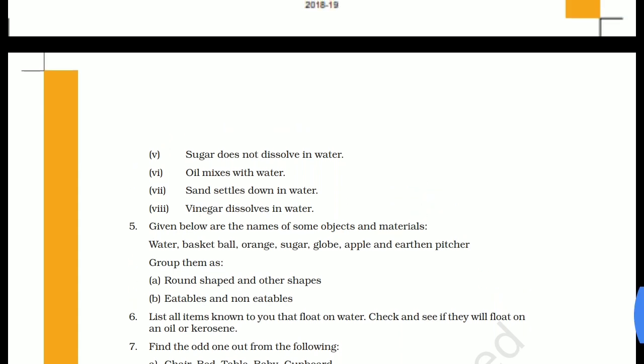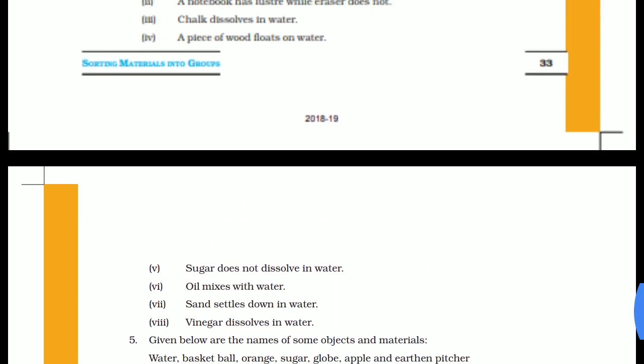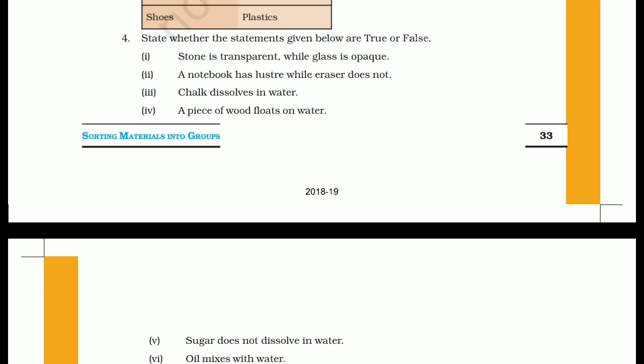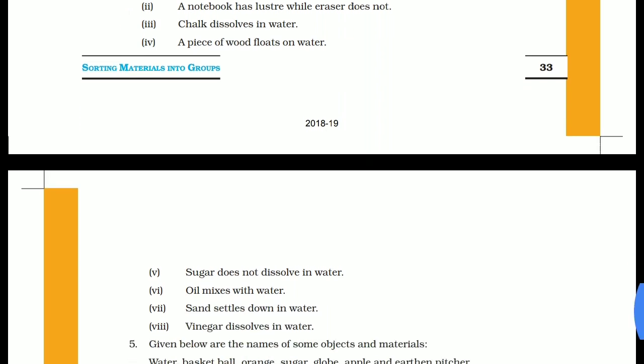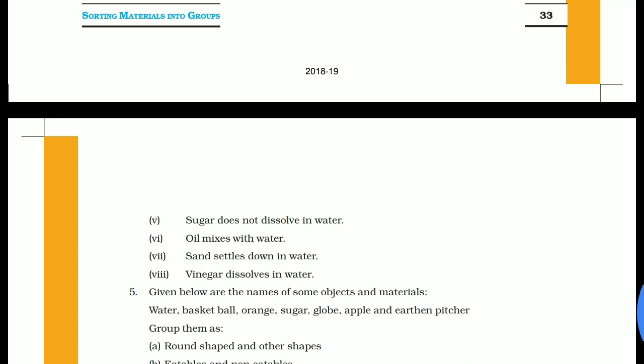To summarize the true/false answers: the first statement is false, second is false, third is false, fourth is true, fifth is false, sixth is false, and the seventh and eighth statements are both true.